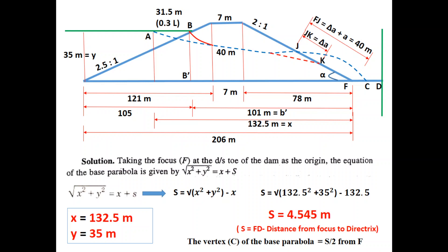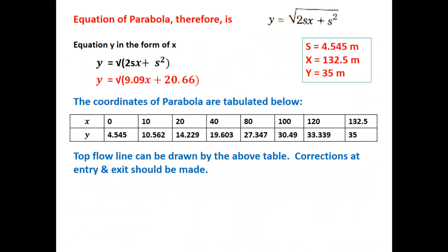s is the distance from focus to the directrix; the vertex C of the parabola is at s/2 from F. The equation of the parabola is y = √(2sx + s²). Substituting s = 4.545 m gives y = √(9.09x + 20.66). This is the basic equation to obtain the various ordinates of the phreatic line.